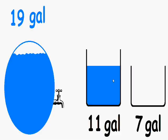Alright, so we just poured all of the water from the 7 gallon container into the 11 gallon container. So at this point, our 11 gallon container has exactly 7 gallons of water.